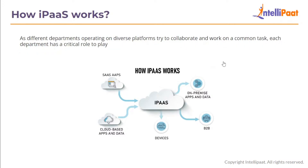This causes severe problems in integrating various systems and acts as an obstacle to the client's success. As different departments operating on diverse platforms try to collaborate and work on a common task, the disparate nature of systems causes loss of data and misalignment of critical information. The systems need a better solution, and this is where IPaaS comes into the picture.